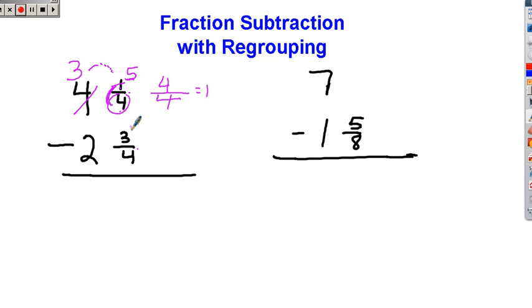So now we subtract. 5 minus 3 is 2. 2 fourths. 3 minus 2 is 1. 1 and 2 fourths, or 1 and 1 half.